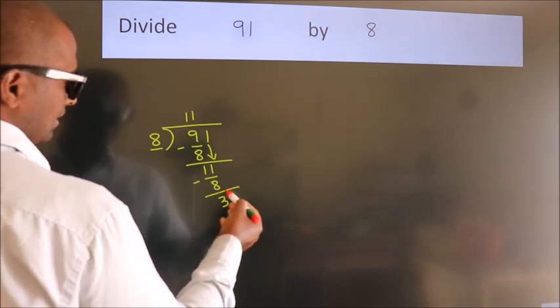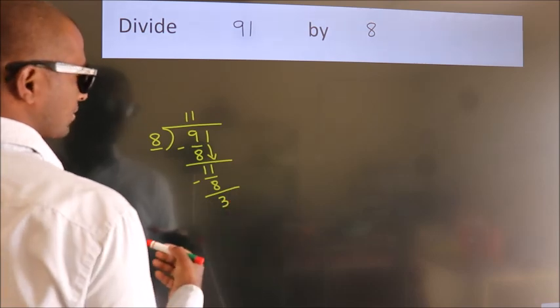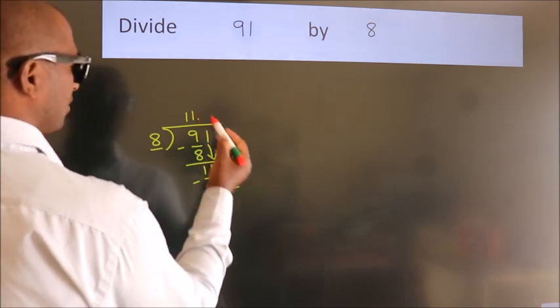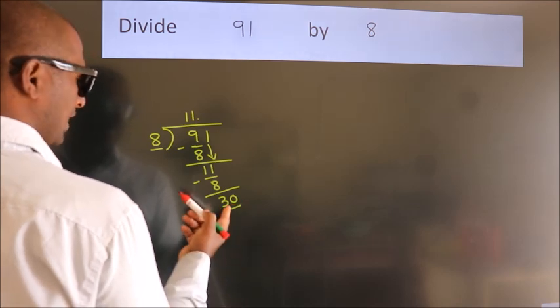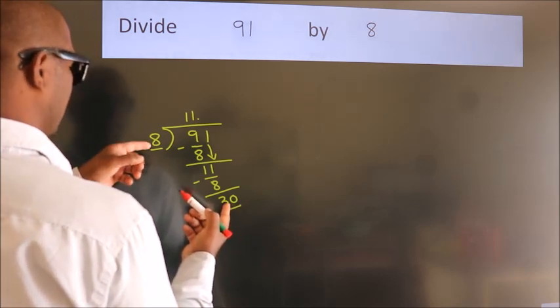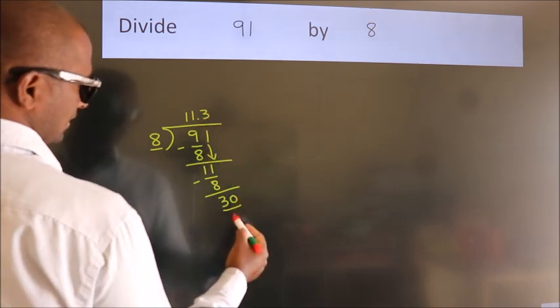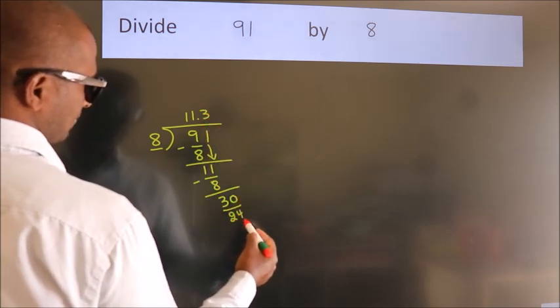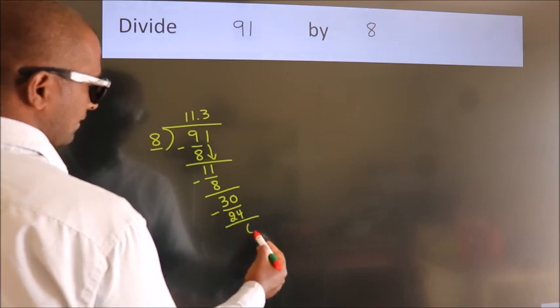After this, no more numbers to bring down. So, what we do is put a dot, take 0. So, 30. A number close to 30 in 8 table is 8 threes, 24. Now, we subtract. We get 6.